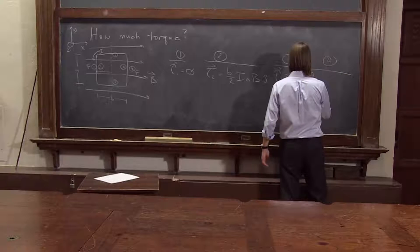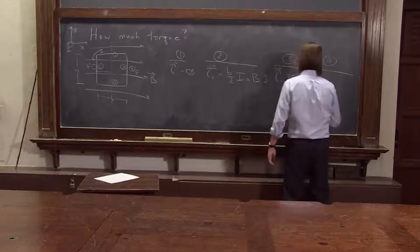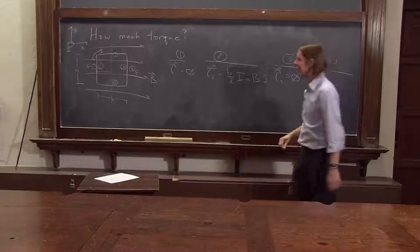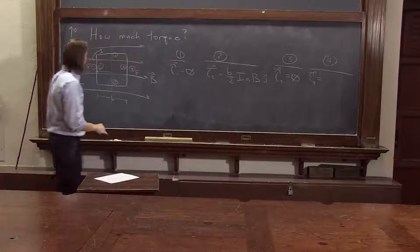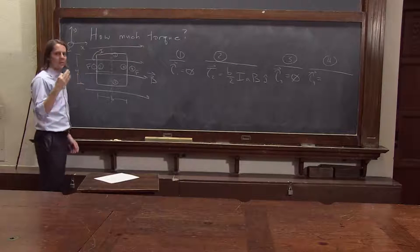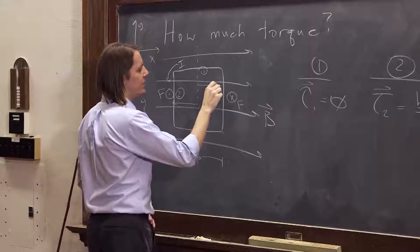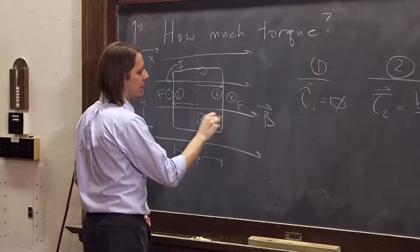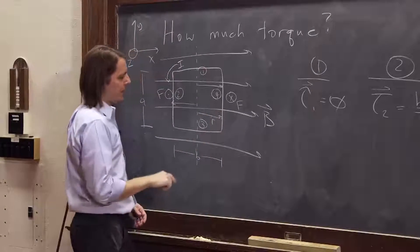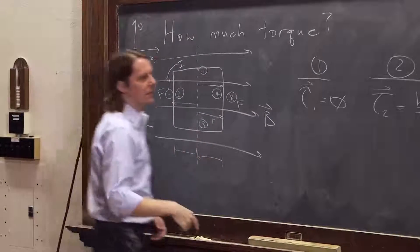Torque four. And now you're wondering, is it going to come out to be zero? I hope not. Let's see. So torque four, R cross F. R is now from the axis of rotation to this side. Like that. There's an R right there. Its length, again, is B over two.